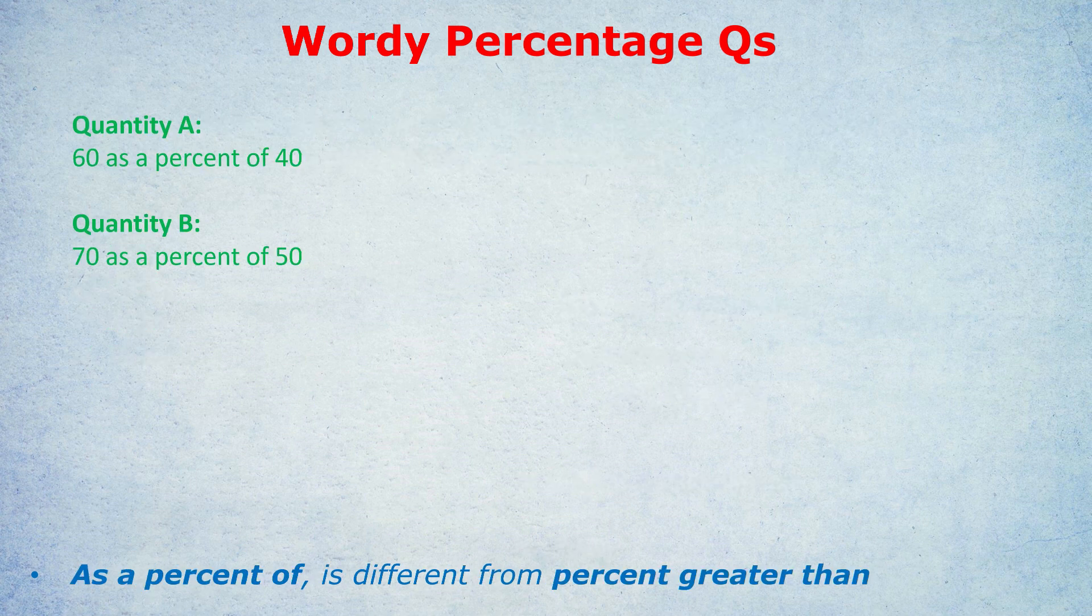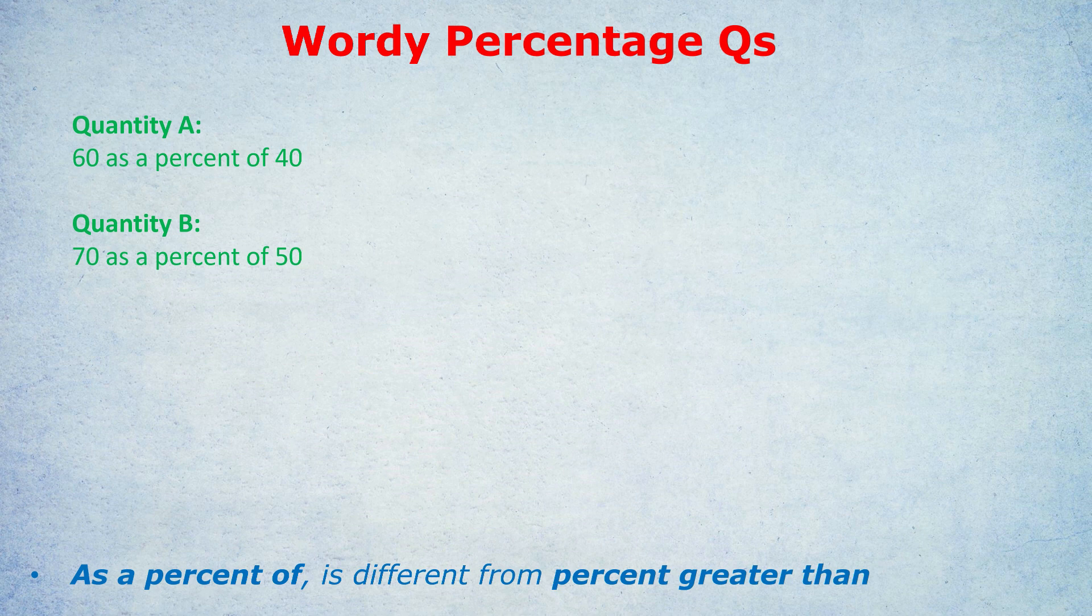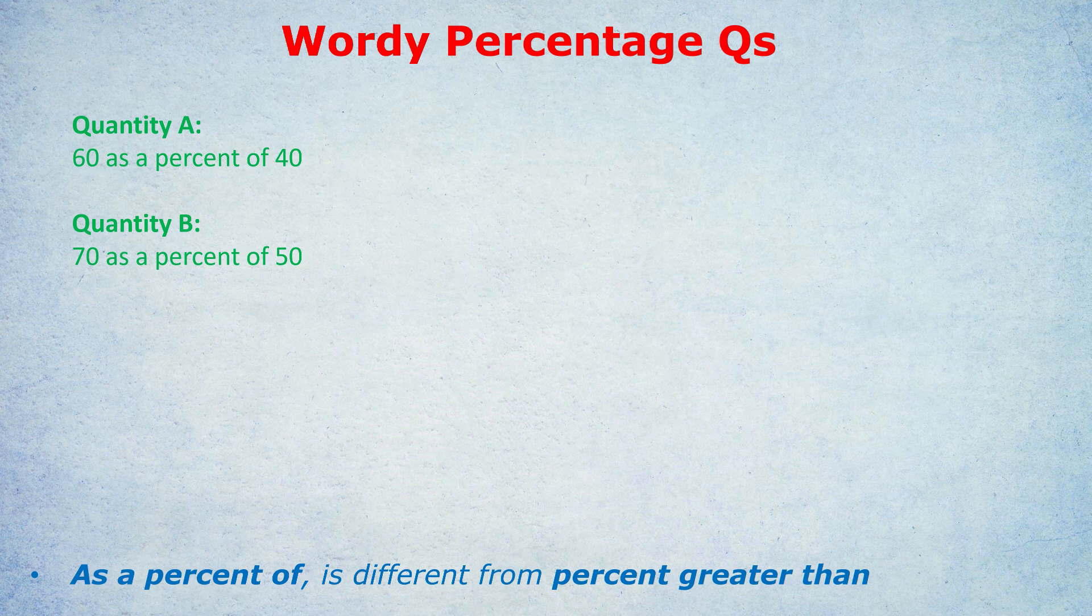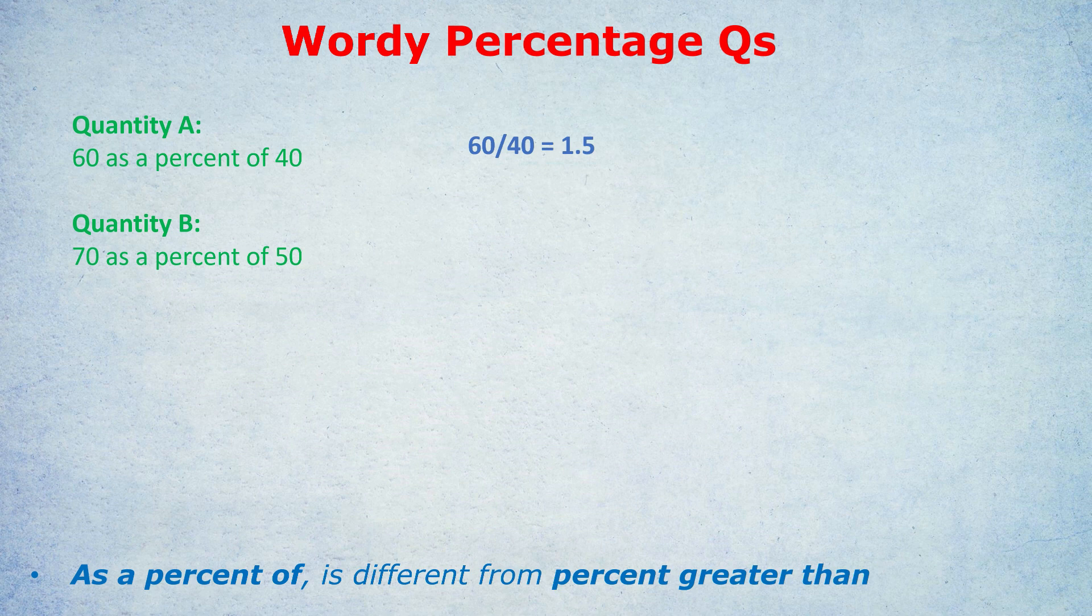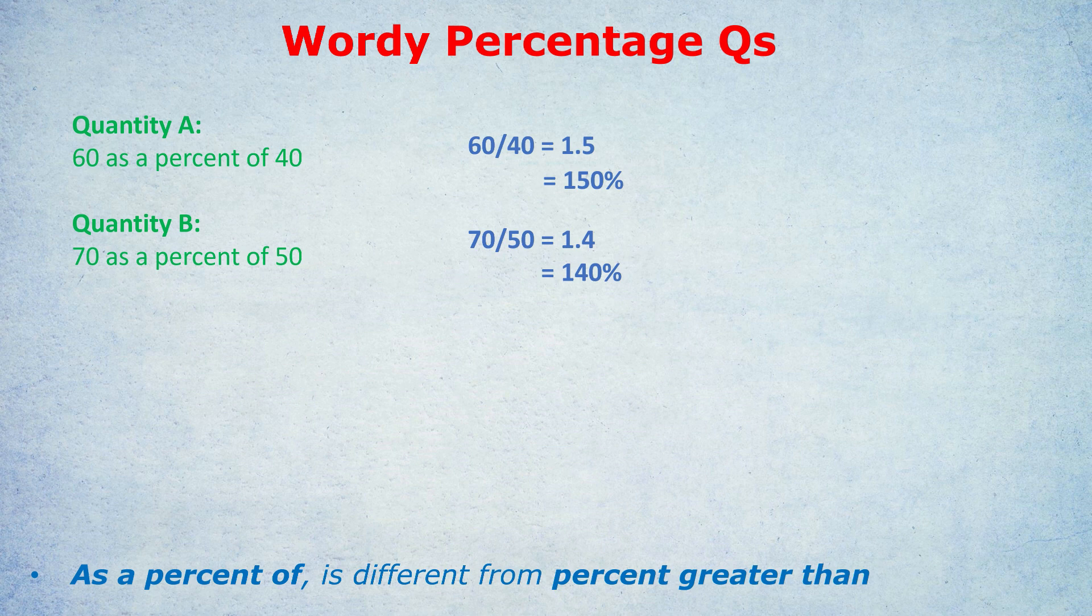Now, I did tell you that percent of would come back because we have quantity A, 60 as a percent of 40, quantity B, 70 as a percent of 50. Some of you may be able to do this in your head, but I'm going to show you the proper way. As I've written down below, as a percent of is different from percent greater than. We don't use that formula. As we saw earlier with the 5,000 as a percent of 36,000, we do the first number divided by the second number. Just simply 60 divided by 40 in this case, giving us 1.5 and any decimal you can translate to a percentage by times it by 100. That's 150%. The way you'd say it in English is 60 is 150% of 40. Let's do the same thing for quantity B. 70 as a percent of 50 is 70 divided by 50, which equals the decimal 1.4 times by 100, and that's 140%. So quantity A is bigger.